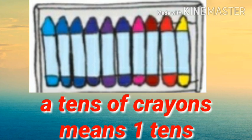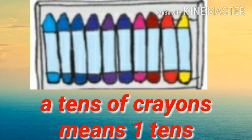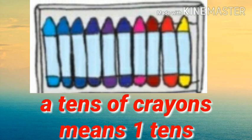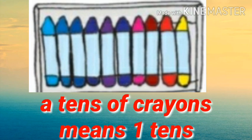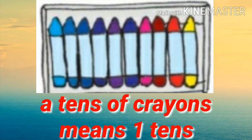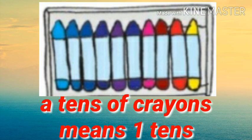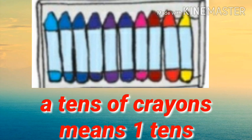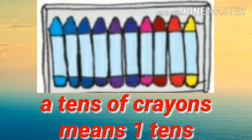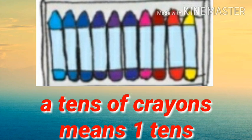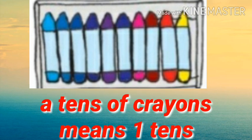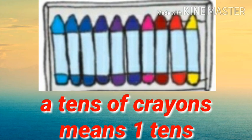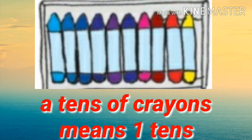And what is in the next picture? Yes, it is a crayon box. How many crayons are in the box? 10 crayons. So it is a group of 10 crayons, which means 1 ten.